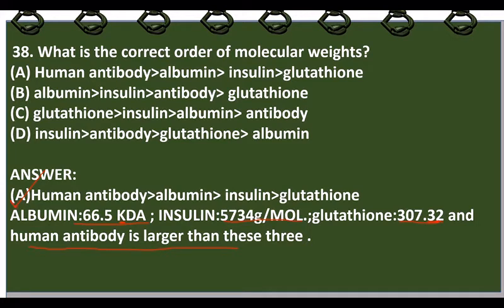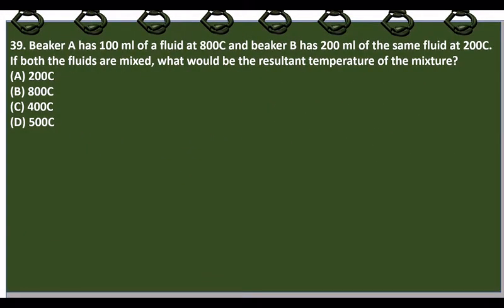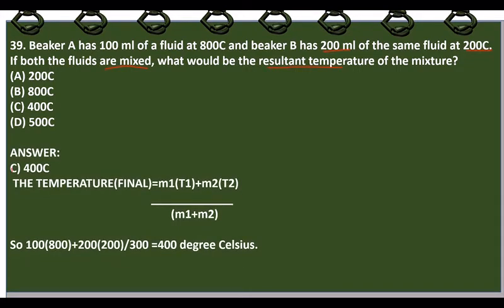Beaker A has 100 ml of fluid at 800°C and B has 200 ml of the same fluid at 200°C. If both are mixed to give 300 ml, what is the resultant temperature? The answer is C, 400°C. Using the formula: T_final = (M1×T1 + M2×T2) / (M1+M2) = (100×800 + 200×200) / 300 = 400°C.